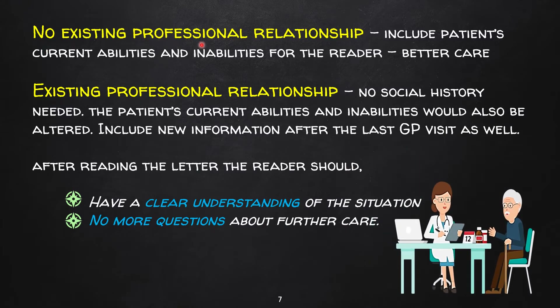If there is no professional relationship between the patient and the reader, you have to include all current abilities and inabilities so the reader can provide appropriate care. If they have an existing professional relationship, you don't have to include the social history, but you do have to include current abilities and inabilities if they are recent, as well as the recent GP review. Ask yourself: will the reader understand the situation clearly, and is the information given enough to provide proper care to the patient?